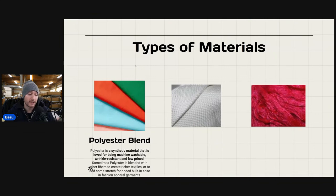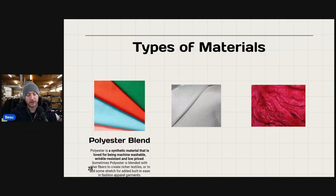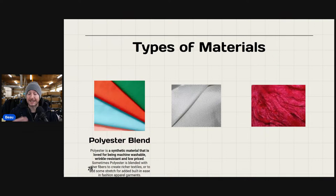Polyester blend — polyester is loved for being machine washable, wrinkle-resistant, and low-priced. Sometimes it's blended with other fibers to create richer textiles or to add stretch for built-in ease in fashion garments. For example, leggings might be 90% polyester and 10% spandex — I would put polyester blend under the drop-down menu, then check both polyester and spandex. Getting this right will help you save time when you're doing hundreds of listings over the course of your eBay career.